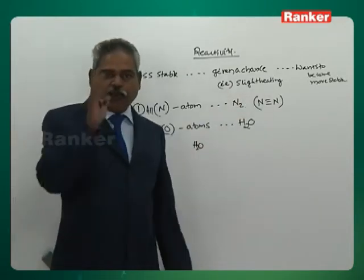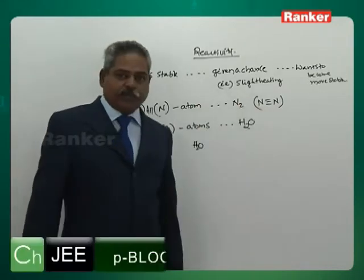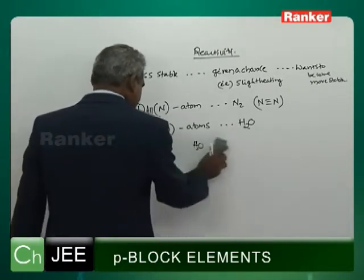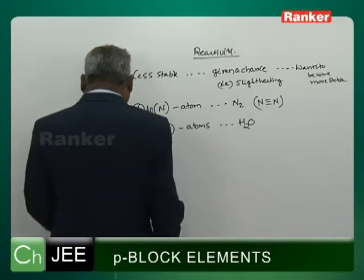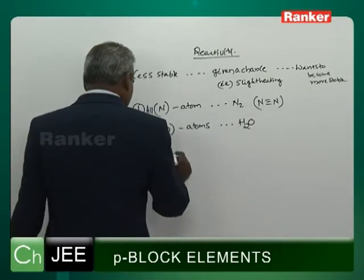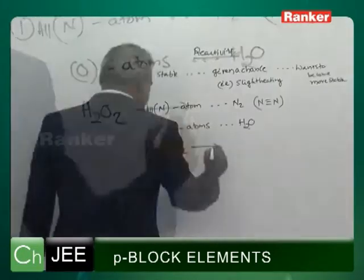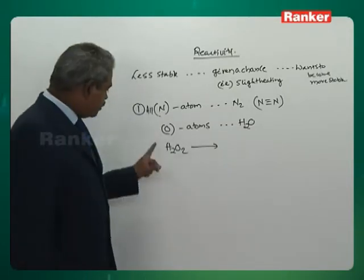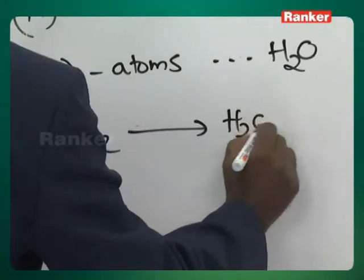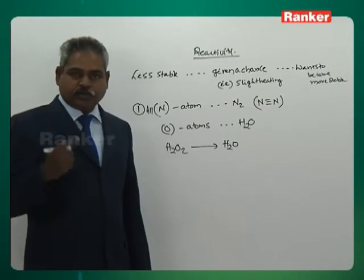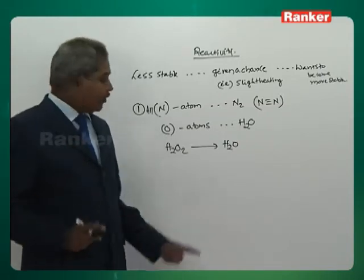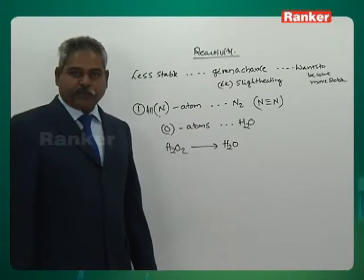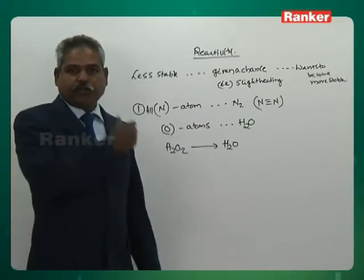N2 is highly stable — it doesn't want to react with oxygen, which is why we get oxygen for breathing. H2O is very stable, which is why we get water for life. All oxygen atoms want to become H2O. In our earlier classes, we saw molecules containing a weak bond. H2O2 has an oxygen-oxygen single bond — a peroxy bond which is weak. H2O2 wants to become H2O because H2O is highly stable and the peroxy bond is very, very weak. That is why we carefully checked whether a molecule has a peroxy bond.